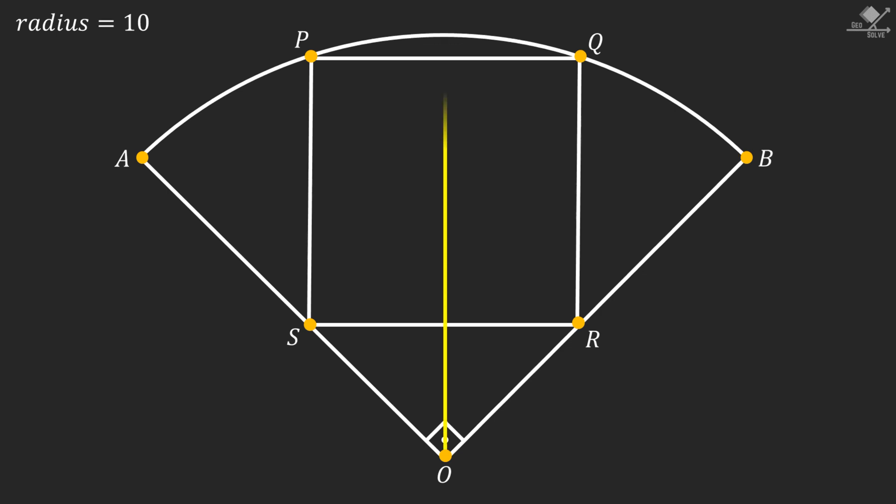Start with dropping a perpendicular from center to chord PQ. This line segment will bisect the chord PQ. And let's call these equal line segments as X units.